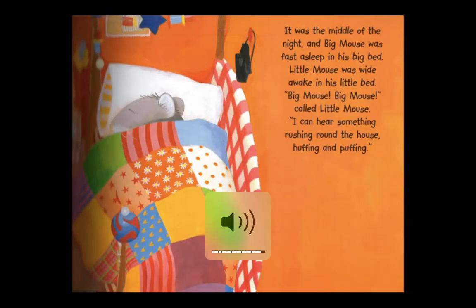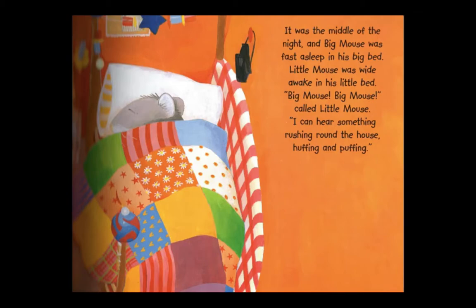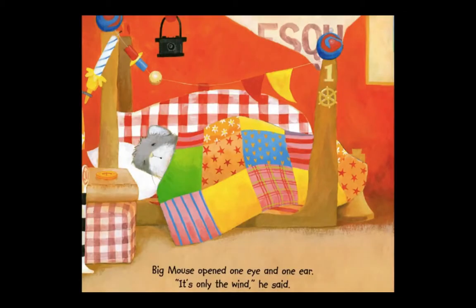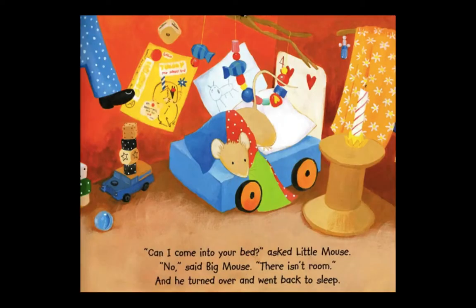It was the middle of the night, and Big Mouse was fast asleep in his big bed. Little Mouse was wide awake in his little bed. 'Big Mouse, Big Mouse,' called Little Mouse. 'I could hear something rushing round the house, hoofing and puffing.' Big Mouse opened one eye and one ear. 'It's only the wind,' he said. 'Can I come into your bed?' asked Little Mouse. 'No,' said Big Mouse. 'There isn't room.' And he turned over and went back to sleep.